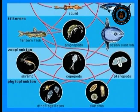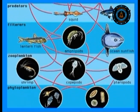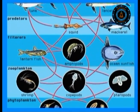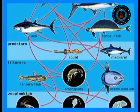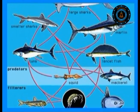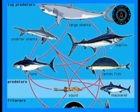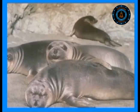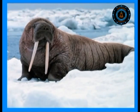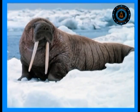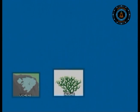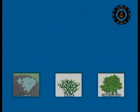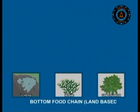The marine-based food chain is again based on phytoplankton. This food chain is very important for animals that come on land to breed, like seabirds, seals and walruses. Lichens, algae and land plants form the bottom of the land-based food chain.